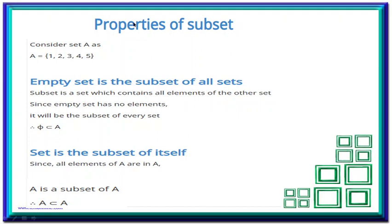Now, a few properties of subsets. Let's take any set A. The first property says that the empty set is the subset of all sets. A subset is the set which contains all elements of the other set, and an empty set has no element. If you missed the last video, please go to my YouTube channel and see that video first for better understanding. Empty set has no element and it will be the subset of every set by definition. So phi is the subset of A — this is one of the properties.